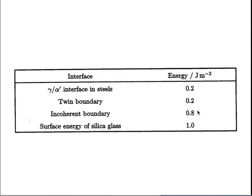Because of this level of coherency in the interface, the interfacial energy is quite small — typically of the order of 0.2 J m⁻². This compares with a twin boundary which is fully coherent. It is also comparable with the surface energy of window glass, confirming that the interfacial energy between martensite and austenite is really quite small.